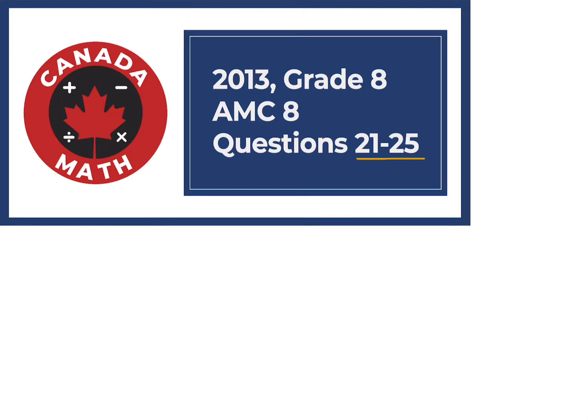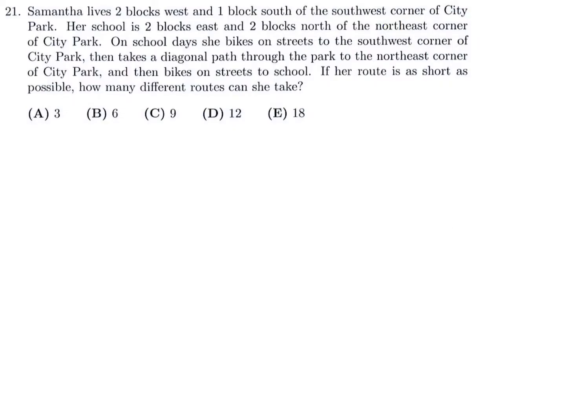Questions 21 through 25 on the 2013 grade 8 AMC 8. Samantha lives two blocks west and one block south of the southwest corner of City Park. Her school is two blocks east and two blocks north of the northwest corner of City Park. On a school day, she bikes on the streets to the southwest corner of City Park, takes a diagonal path through the park to the northeast corner, and then bikes on the streets to school. If her route is as short as possible, how many different routes can she take?